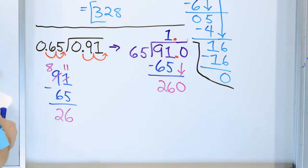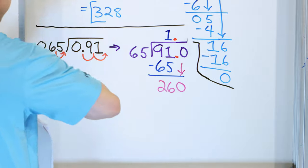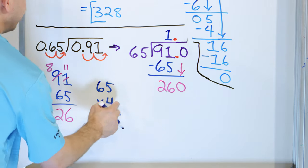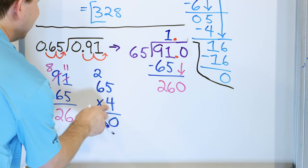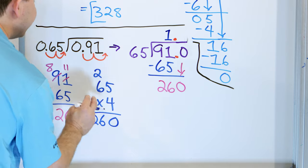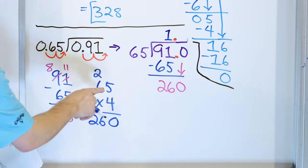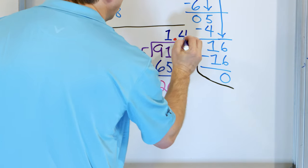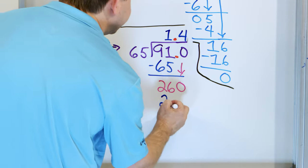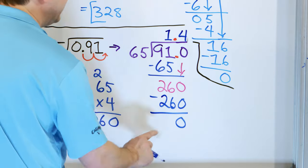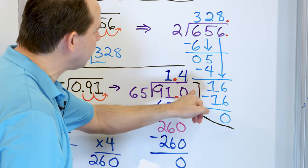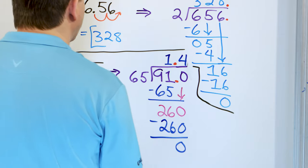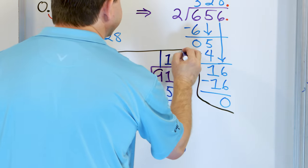So 65 times what is 260? Let's go here and try 65 times 4: 5 times 4 is 20, carry 2; 6 times 4 is 24, plus 2 is 26. So 65 times 4 is 260. So we put a 4 here. Four times 65 is 260. Then we subtract and get a remainder of zero. Now we don't have any more digits — we could keep adding zeros, but we don't need to since the remainder is already zero. So the answer is 1.4.